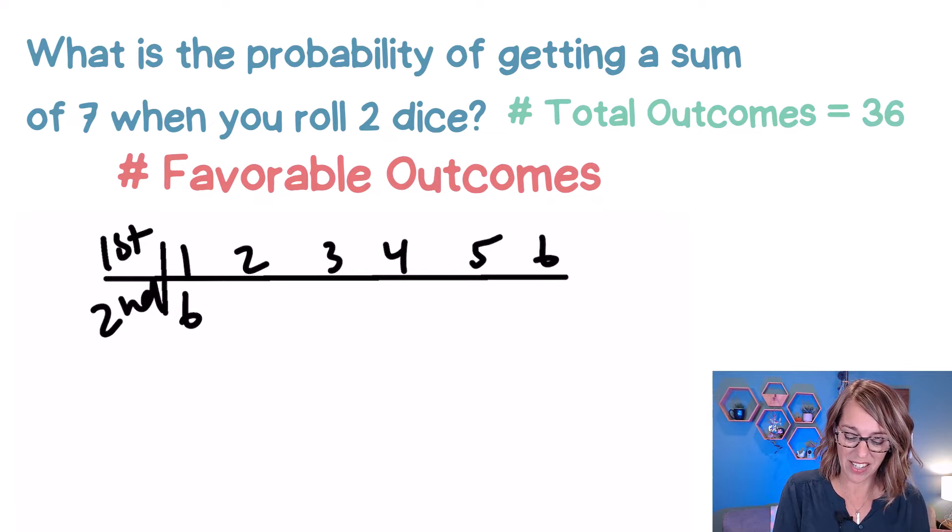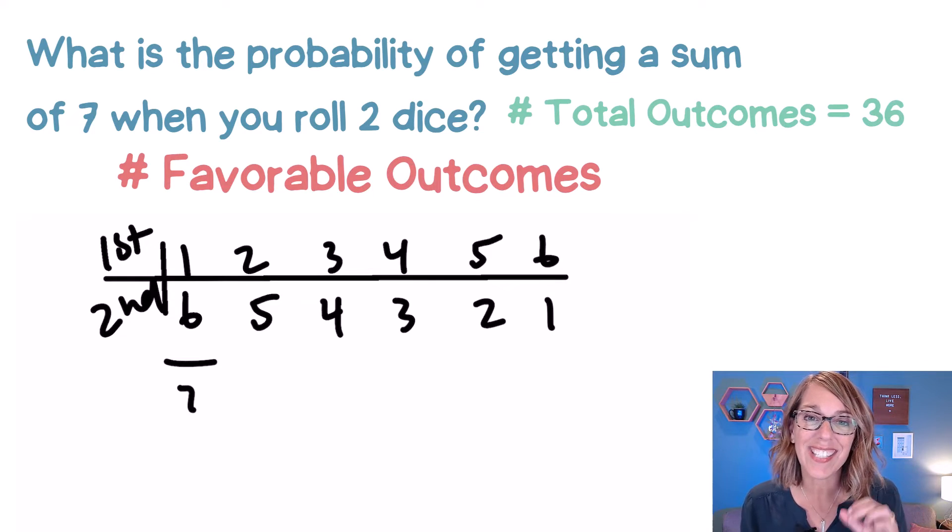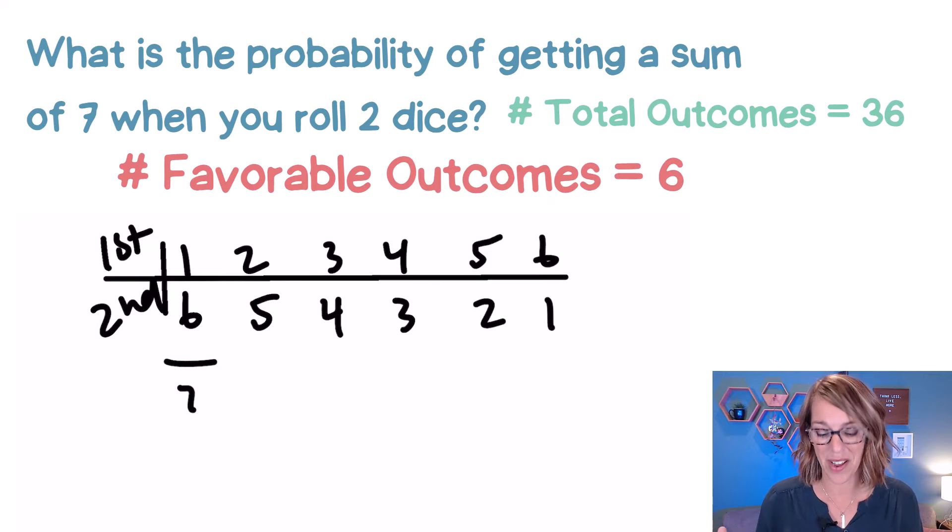So I could do a one and a six because those add up to seven, I could do a two and a five, a three and a four, a four and a three, a five and a two, or a six and a one. Such an easy way to come up with those six different possible outcomes.